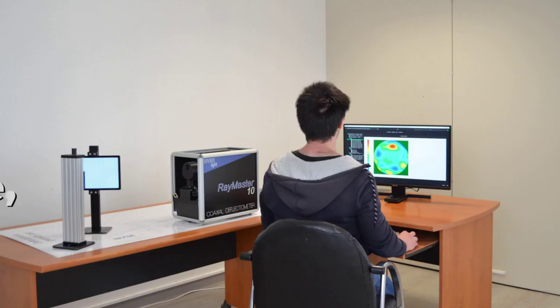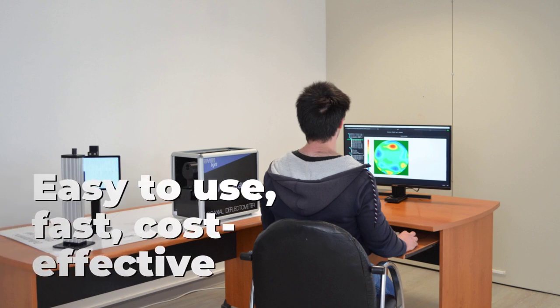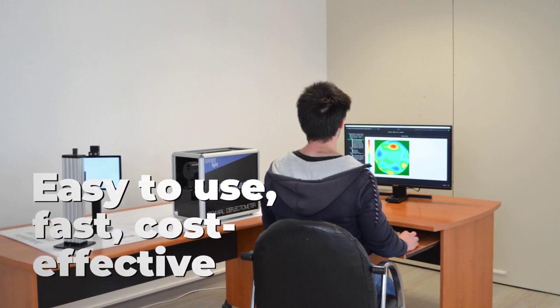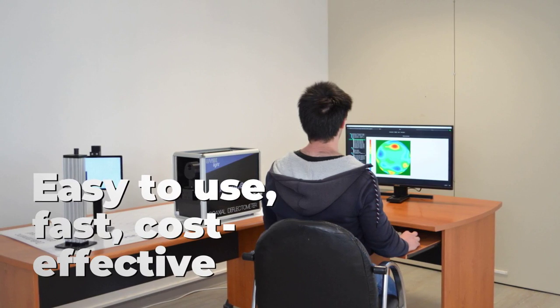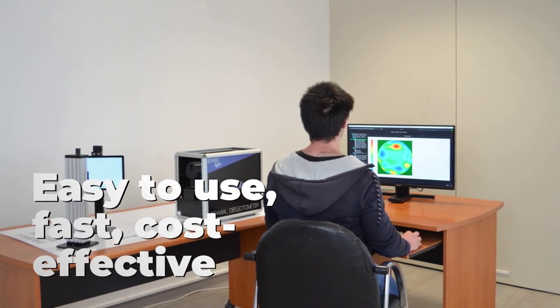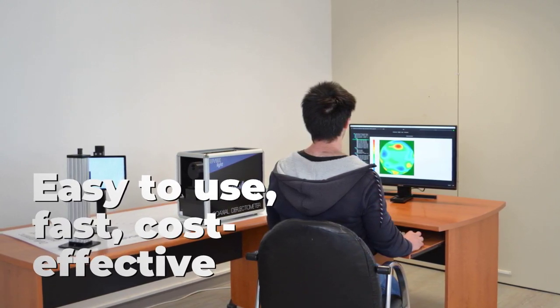The Raymaster 10 is set up and ready to measure in less than 30 minutes after delivery. It can measure any kind of shape, even freeform, without costly add-ons like CGH or objectives.